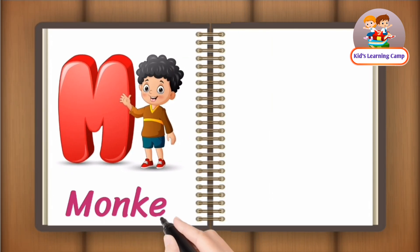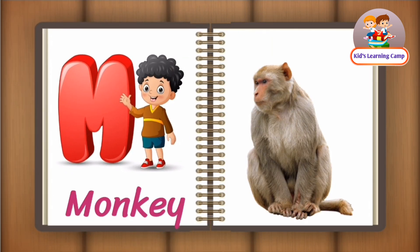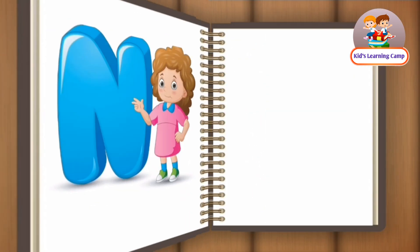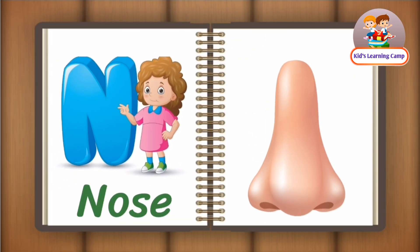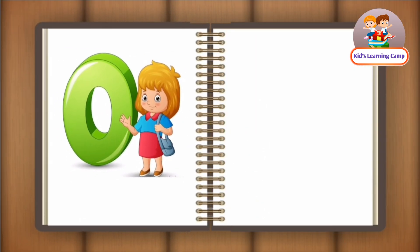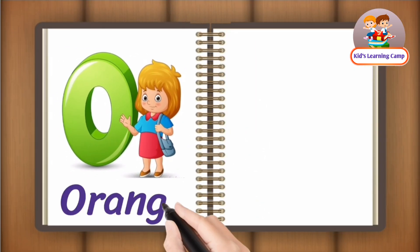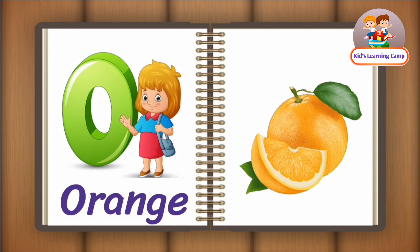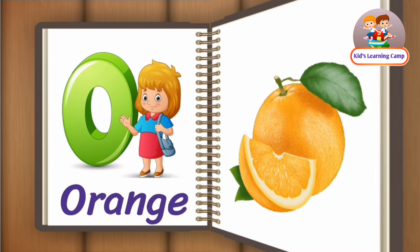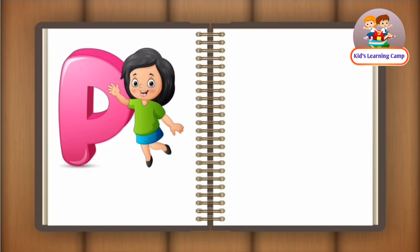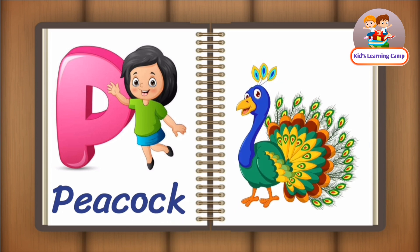M for Monkey. N for Nose. O for Orange. P for Peacock.